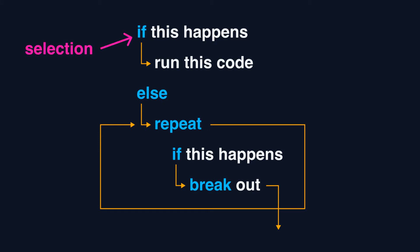The selection statements select which code to run according to a specified condition. The iteration statements repeat a block of code while a specified condition is met. And the jump statements transfer the execution flow to a different line on a specified condition. We'll see each type in the following videos.